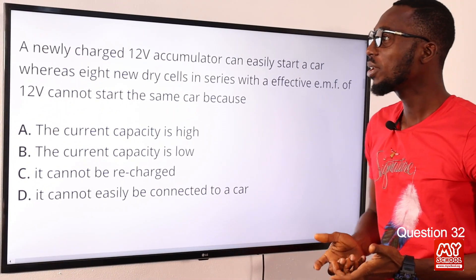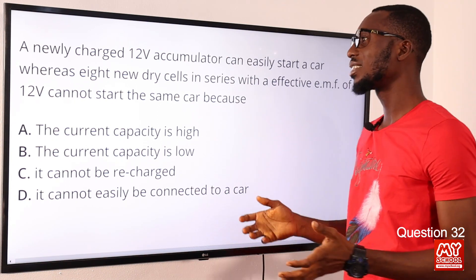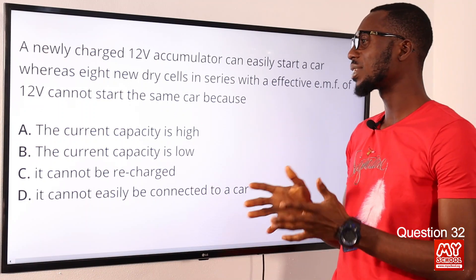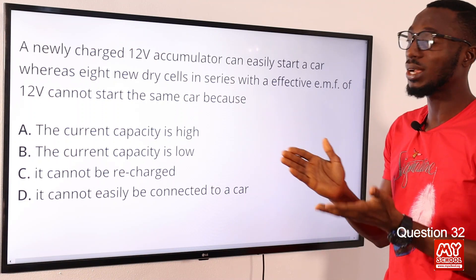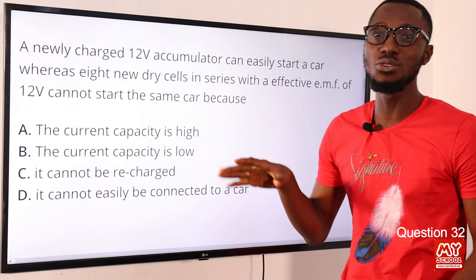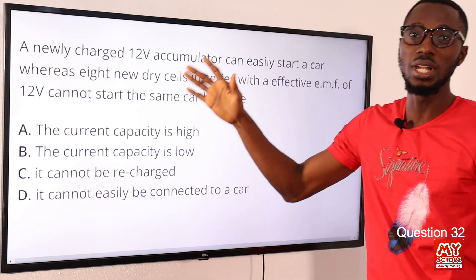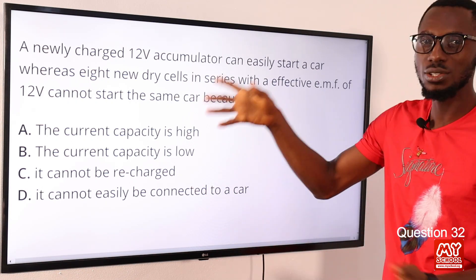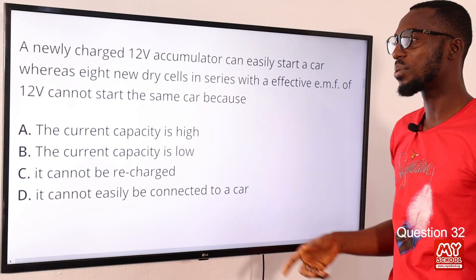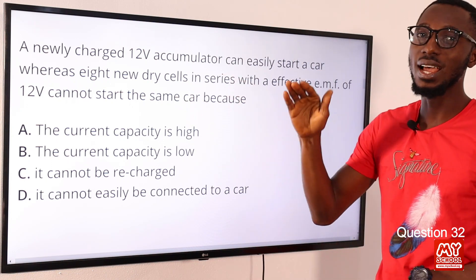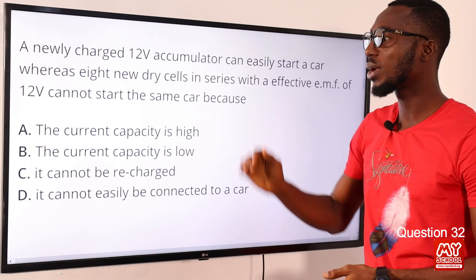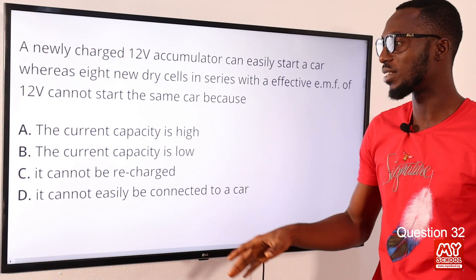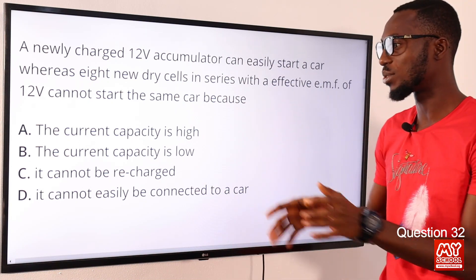Question 32: A newly charged 12-volt accumulator can easily start a car, whereas eight new dry cells in series with an effective EMF of 12 volts cannot start the same car. This is because the current-carrying capacity of a dry cell is low compared to the accumulator. The accumulator can supply hundreds of amperes, but the dry cell has higher internal resistance and cannot supply that amount of current.